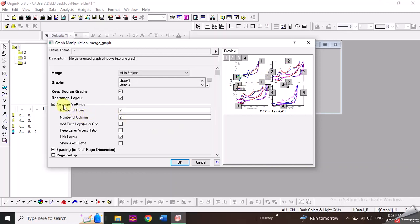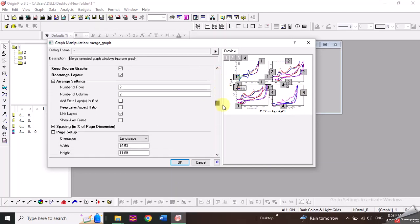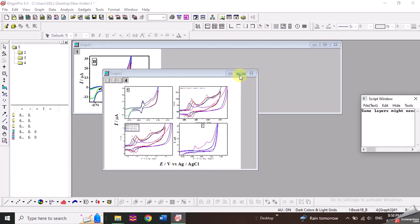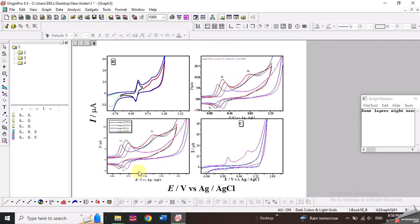Now you can see there is an arrangement setting. Number of rows are two and the number of columns are two, which are perfect for the four graphs that can be arranged in this square form. Further, if you like, you can also change the page setting, you can change the width and the height. Although depending upon the number of rows and columns, it automatically adjusts it. But if you like more width or height, you can change it. I will just click OK. And then you can see that I have the four graphs on the same window.